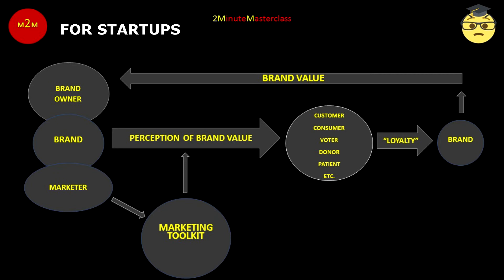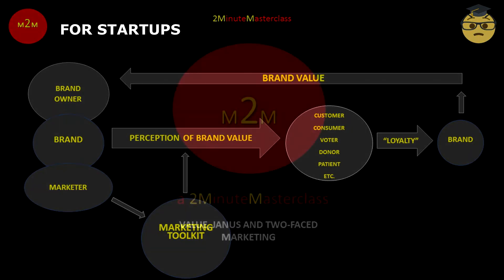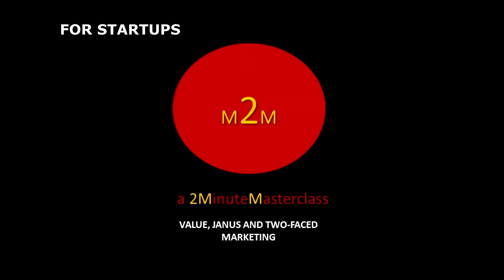The whole process is one continuum of marketing effectiveness, building brand value to the account of its owner. The way that effective marketing of a brand, to the win-win benefit of owners and myriad other stakeholders, forms the basis of our next class: value, the Roman god Janus, and two-faced marketing. Look forward to seeing you there.